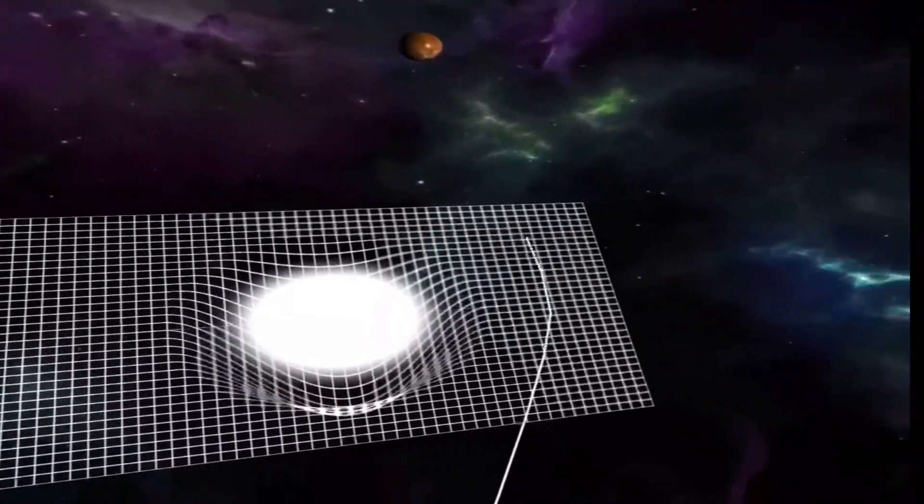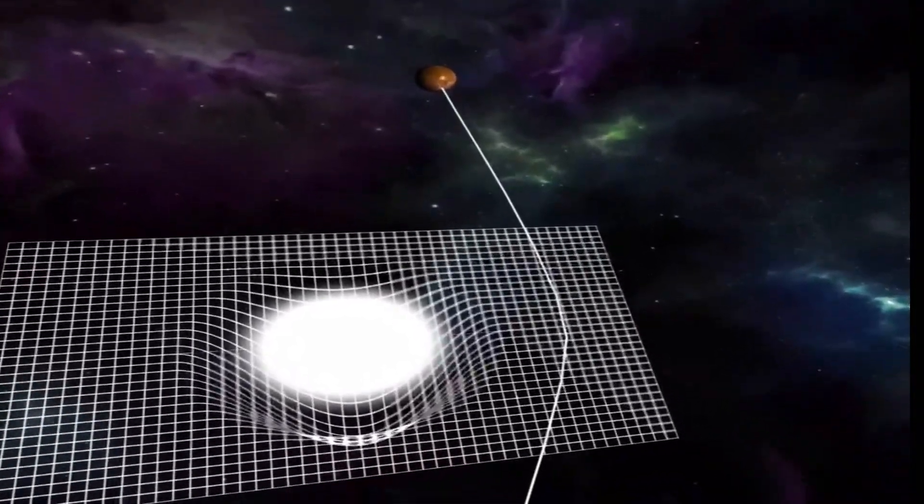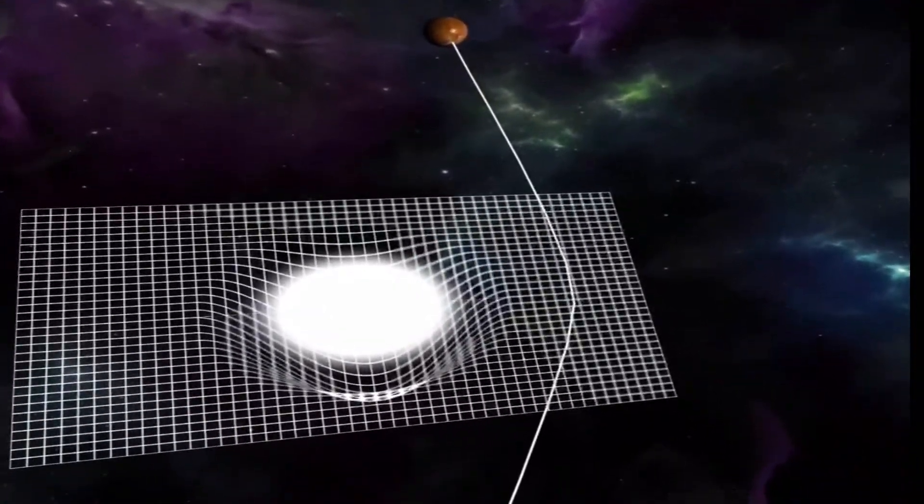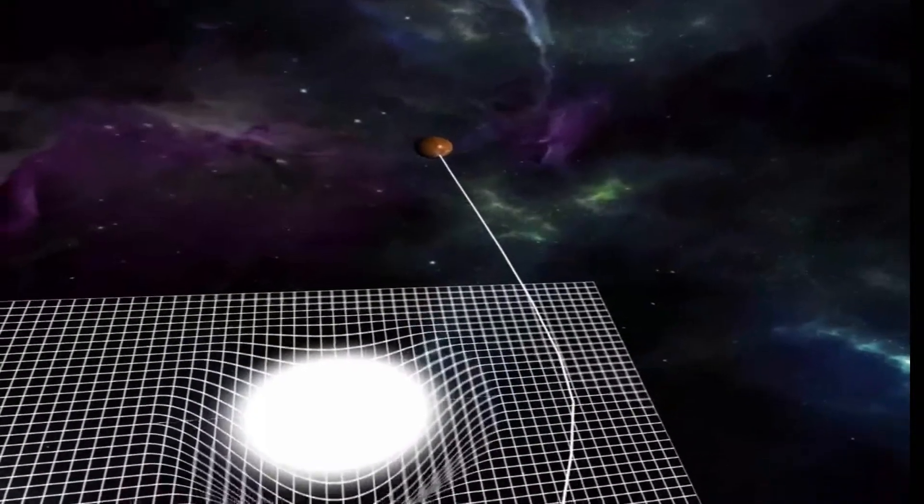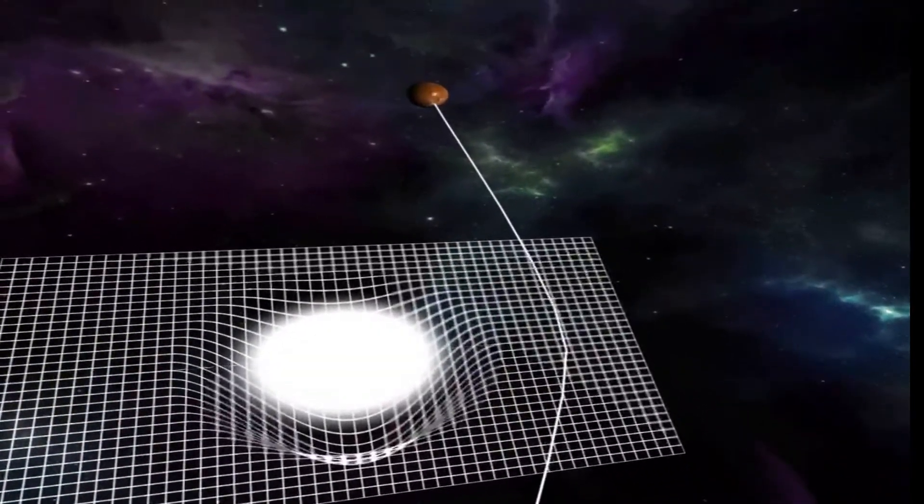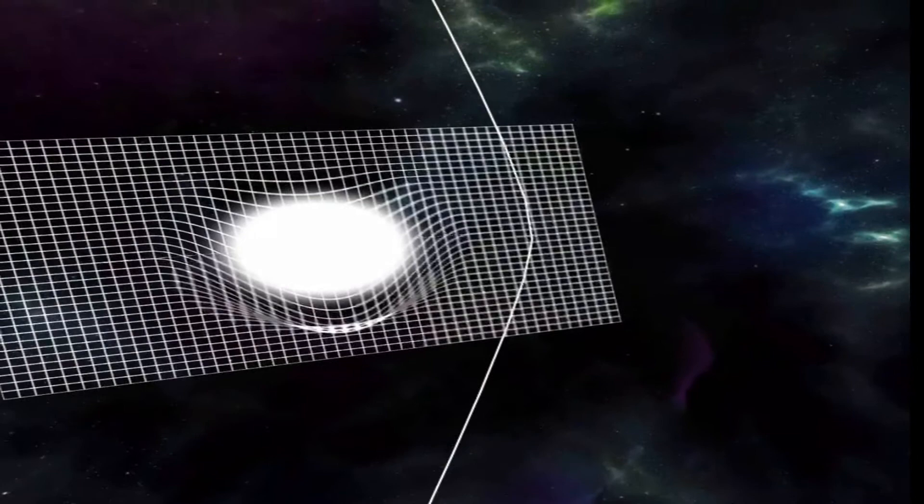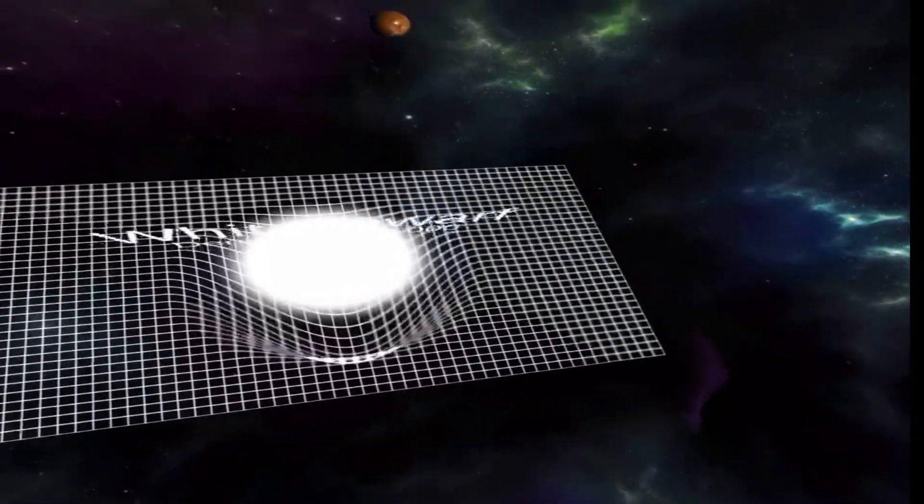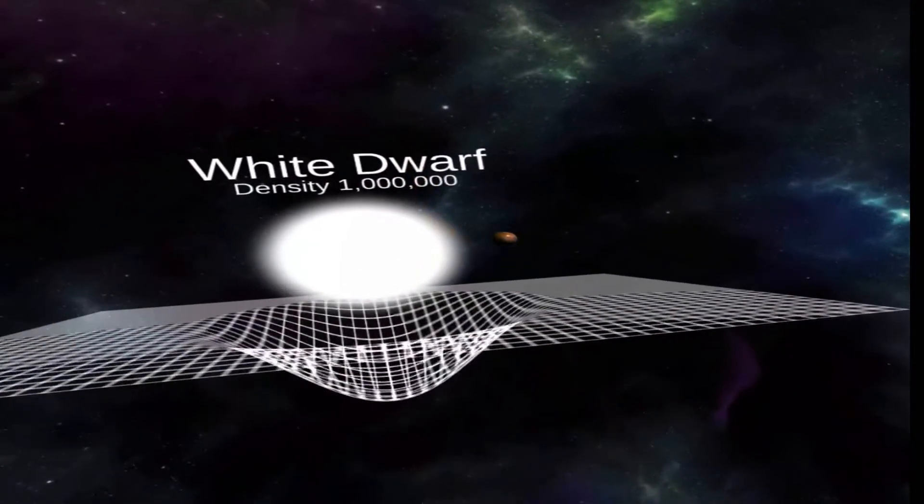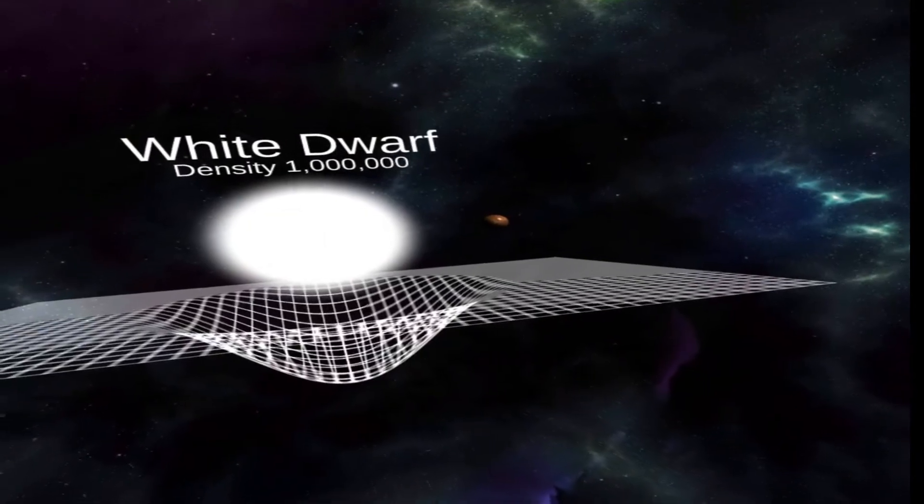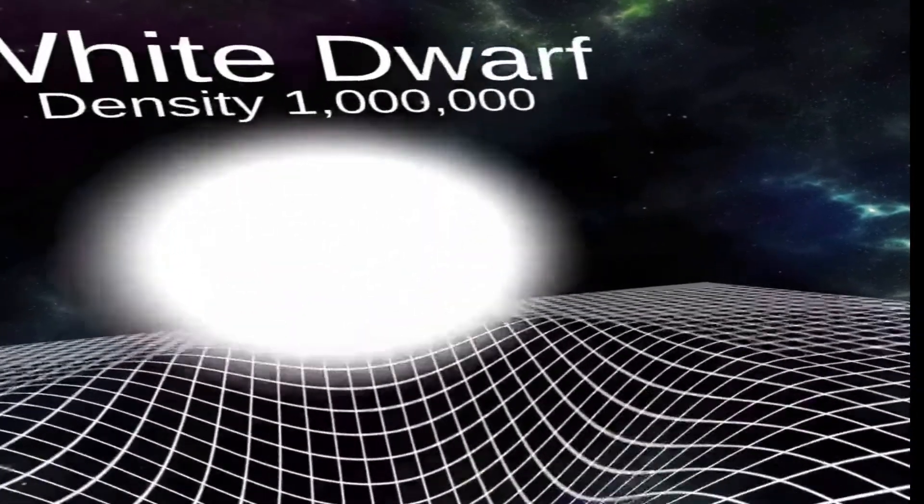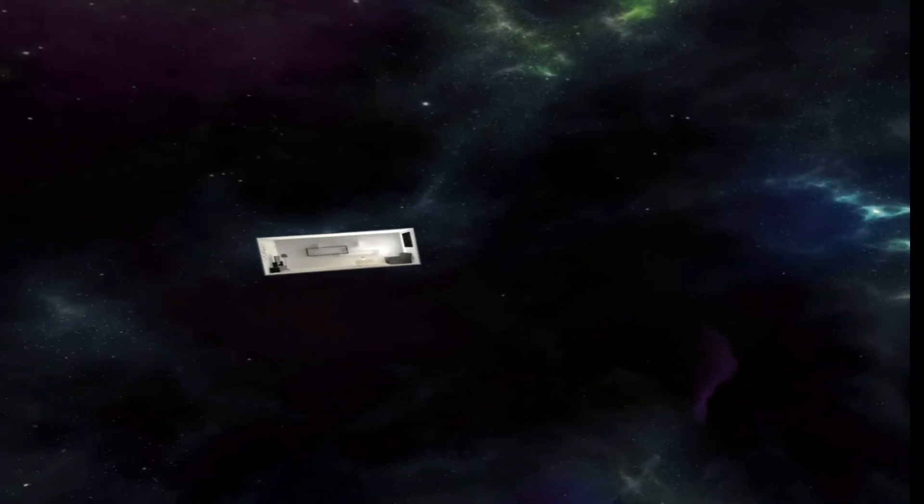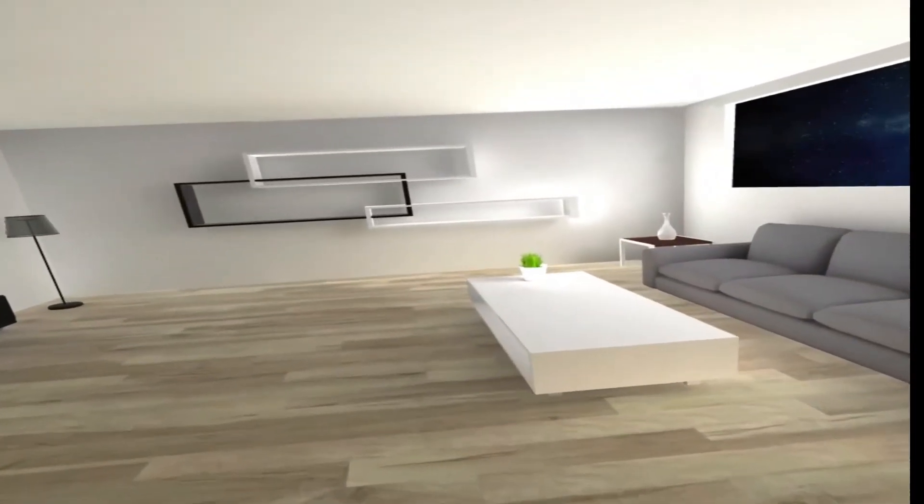In general relativity, light follows the curvature of space-time. Hence when light passes around a massive object it is bent. This means that the light from an object on the other side will be bent towards an observer's eye, just like an ordinary lens. Let's change a scene and demonstrate what the black hole looks like.